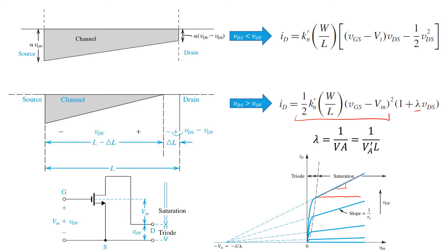Sometimes, instead of lambda, we'll use the parameter V subscript A. This should be a subscript here. Va, in turn, is proportional to the channel length.